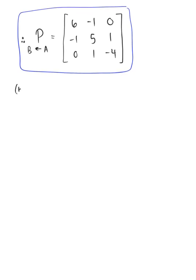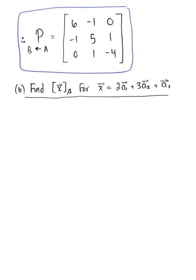In part b, we are asked to find the coordinates of vector x relative to basis b, where x is defined as the linear combination 2 times vector a₁ plus 3 times vector a₂ plus vector a₃. By the change of basis definition, the coordinates of vector x relative to basis b equals the change of coordinates matrix from basis a to basis b multiplied by the coordinates of vector x relative to basis a.